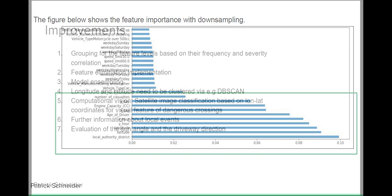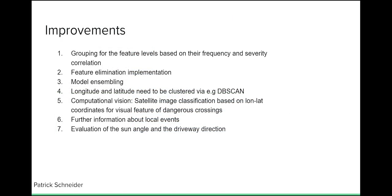The first improvement would be to group the feature levels based on their frequency and severity correlation to reduce the feature space. Another improvement would be a more advanced feature elimination technique and make use of model ensembling to reduce method-based biases. Point 4, the longitude and latitude should be clustered in a more representative way. This could be done with the DBSCAN clustering method. A more sophisticated improvement could be to get the coordinates of the accidents and evaluate via satellite images for specific features of the environment, like dangerous crossings.